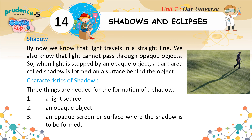By now we know that light travels in a straight line. We also know that light cannot pass through opaque objects. So, when light is stopped by an opaque object, a dark area called a shadow is formed on a surface behind the object.